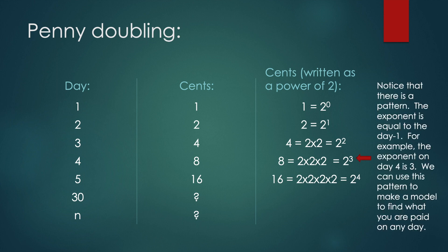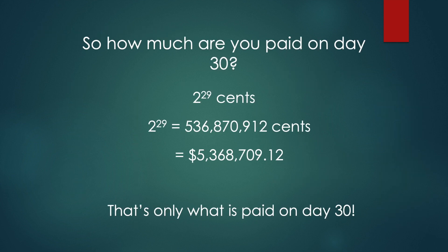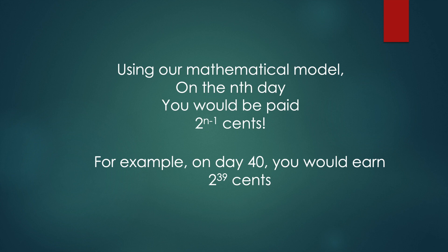Noticing another pattern: on day four, the exponent is three; on day five, the exponent is four. So the exponent is going to be what day we're on subtract one. On day 30, we are going to have an exponent of 29, and for any day n, the exponent will be n minus one. So how much are you paid on day 30? On day 30, you're paid two to the 29th cents, which is well over $5 million — and that's only what you're paid just on day 30. Using our mathematical model, on the nth day you would be paid two to the n minus one cents. For example, on day 40 you would earn two to the 39th cents.